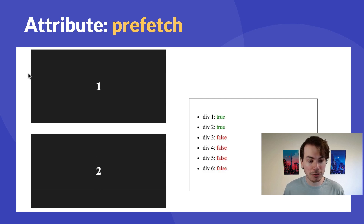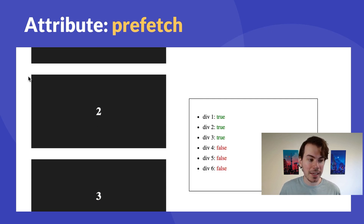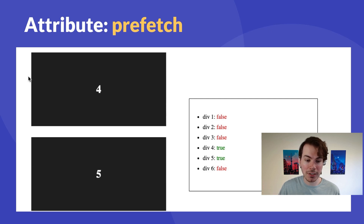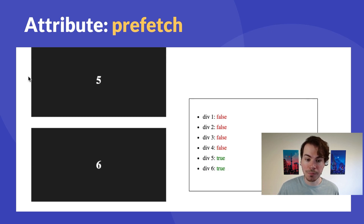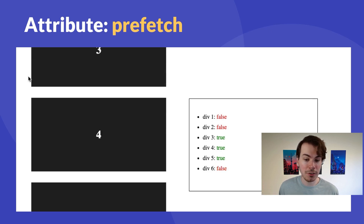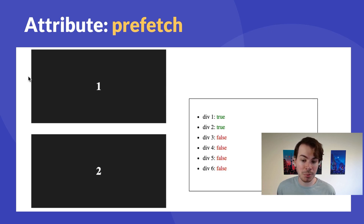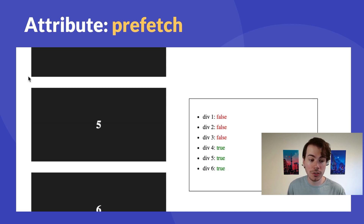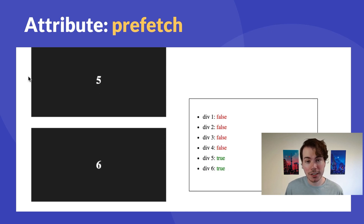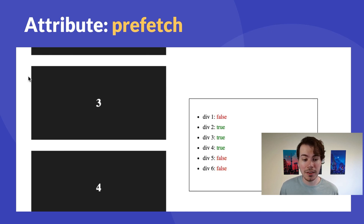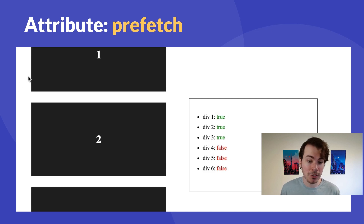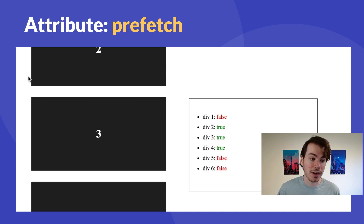As you can see in the example on screen, as an element enters the viewport, that value turns to true — this is when Next.js would start to preload any link that's inside that div. A good thing to note: prefetching is only enabled in production. It's not enabled by default in the development environment.